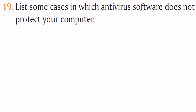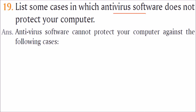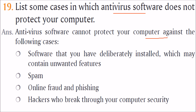List some cases in which antivirus software does not protect your computer. Antivirus software is for viruses, worms, Trojan horses, etc., but it cannot protect against everything. First, software that you have deliberately installed despite antivirus warnings — which may contain unwanted features. Second, spam — antivirus cannot stop spam. Third, online fraud and phishing — very few antiviruses can stop this. Fourth, hackers who break through computer security.